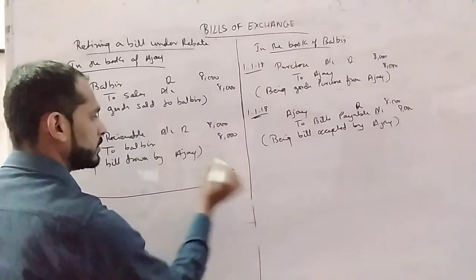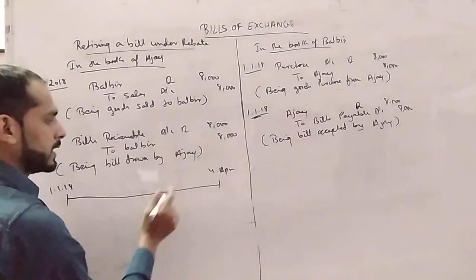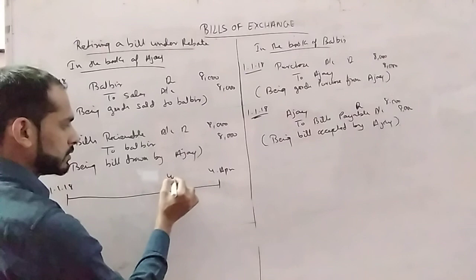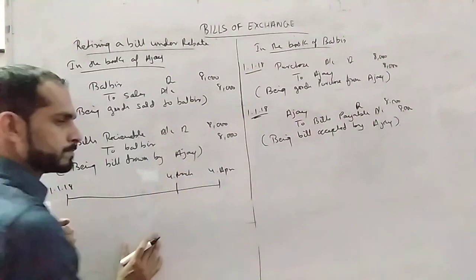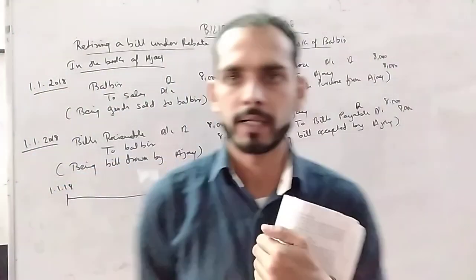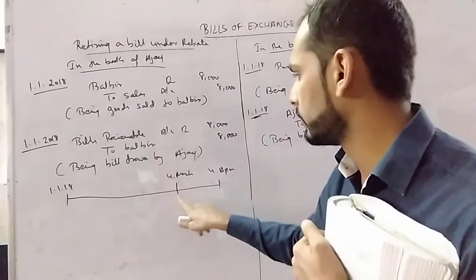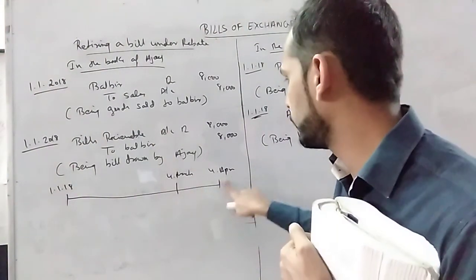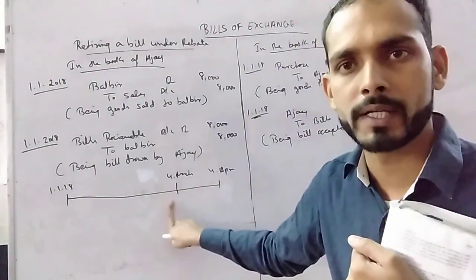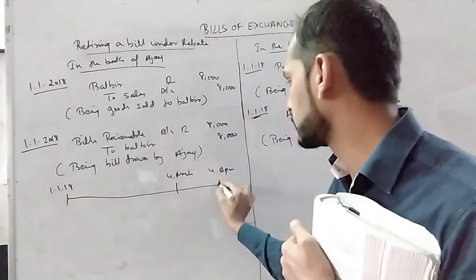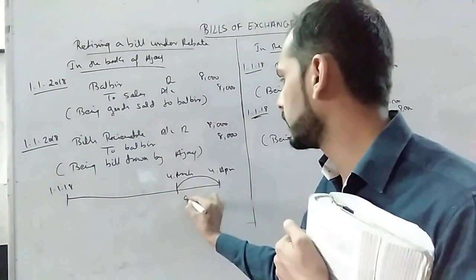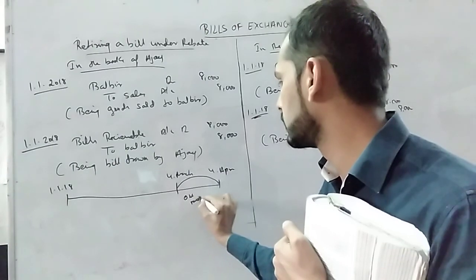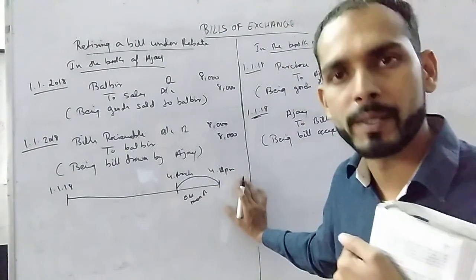The bill is due 4th April. The bill is paid 4th March. When the bill is paid 4th March, the bill is paid 1 month early.